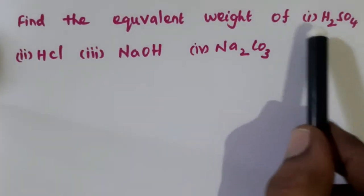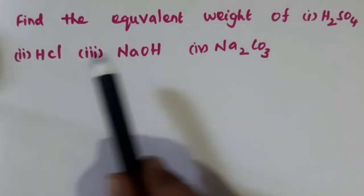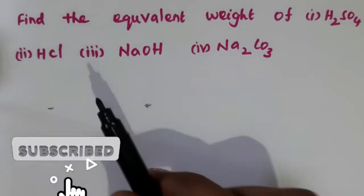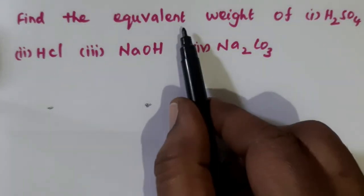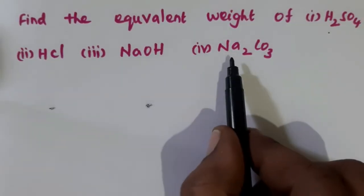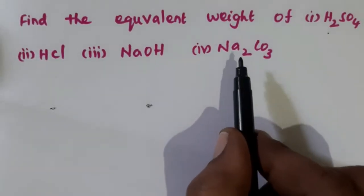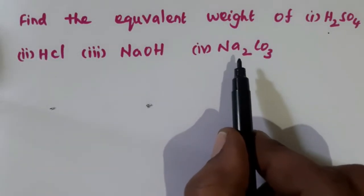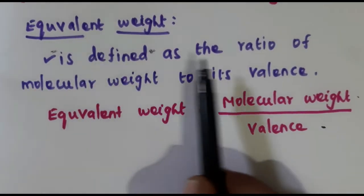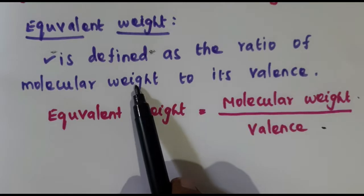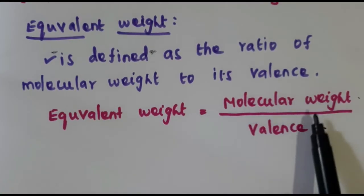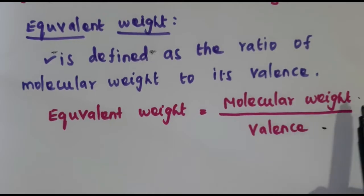Find the equivalent weight of H2SO4, HCl, NaOH and Na2CO3. In this video, we are going to calculate equivalent weight for acids, then bases and for salts. So first, let us see what is equivalent weight. Equivalent weight is defined as the ratio of molecular weight to its valence — that is, equivalent weight is equal to molecular weight divided by valence.